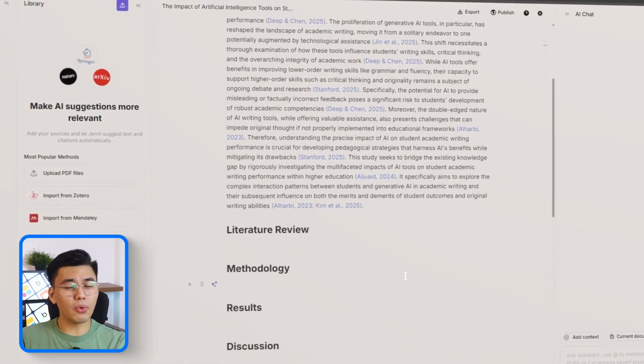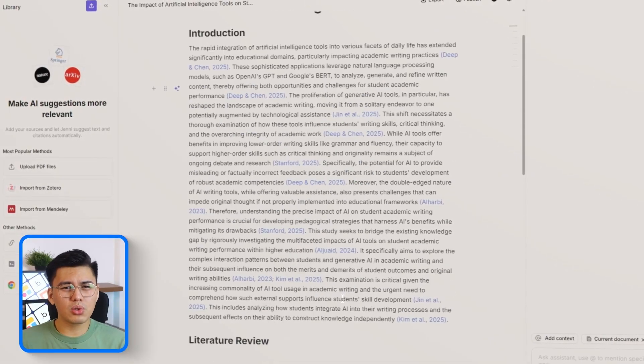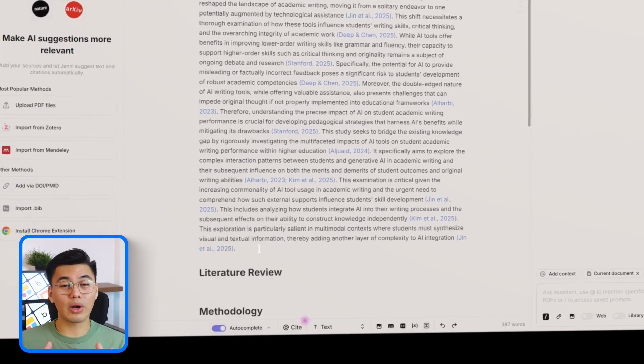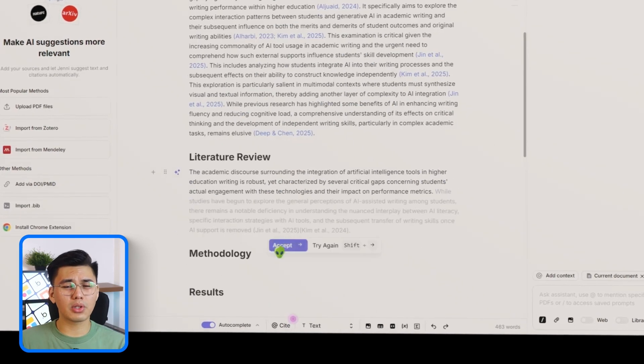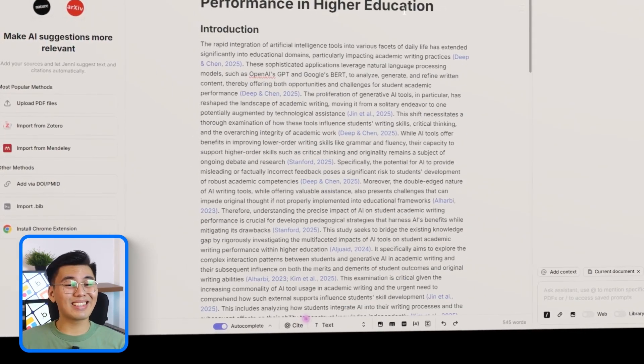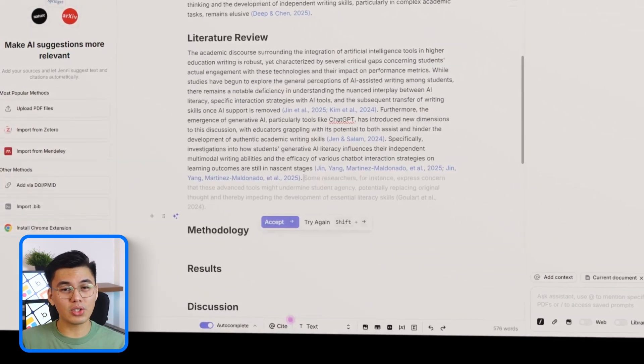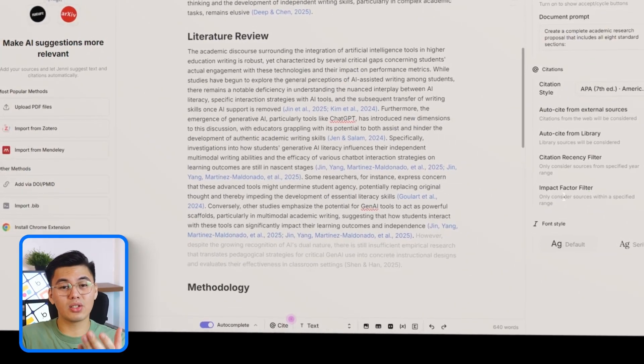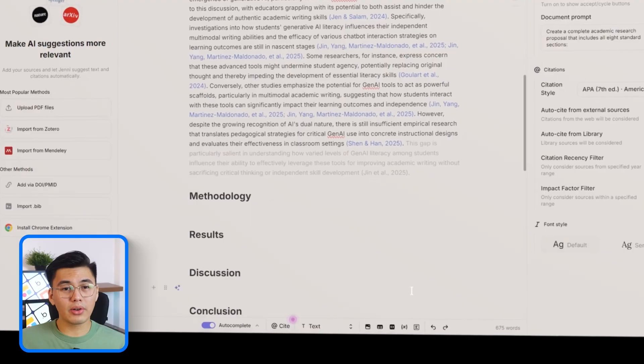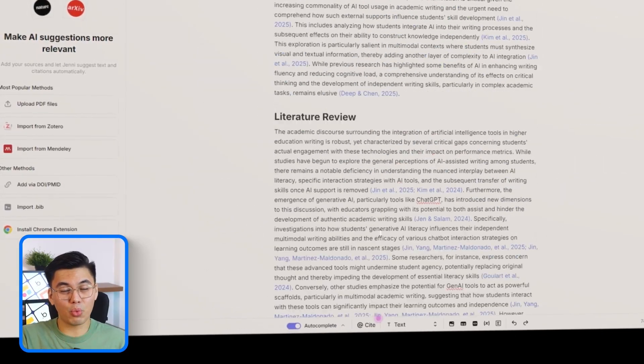Before we drop in the full master prompt, we'll do a quick warm-up just to show how Jenny handles regular academic writing. I'm going to type a simple opening line related to our topic and you'll see Jenny instantly generate autocomplete suggestions.